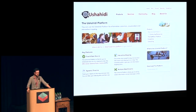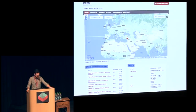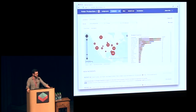Then we have the incident tracking side — how do we actually record things that happen? We built this on top of Ushahidi, an open source platform developed following the violence after the 2008 elections in Kenya. They've been doing really amazing work with this tool and it's been used in a lot of cases. Out of the box it looks something like this, and we ended up customizing it for the election. At the end it looked more like this.